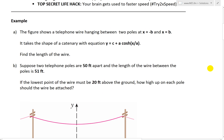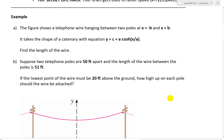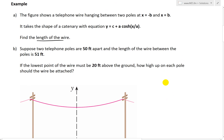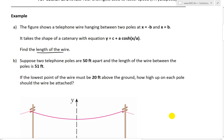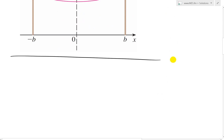The example says the figure shows a telephone wire hanging between two poles at x equals negative b and x equals b. That is how the cable hangs in a catenary shape. It takes the shape of a catenary with equation y equals c plus a times cosh of x over a. We need to find the length of the wire. Let's do part a, then part b afterwards, which plugs in some numbers.